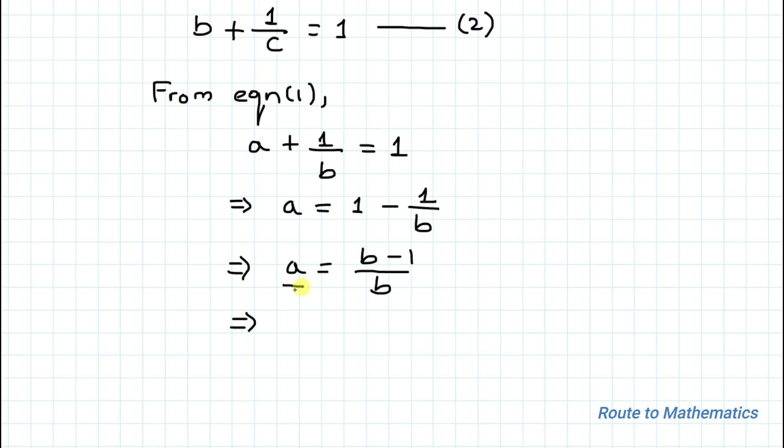For converting it you need to make it reciprocal on both sides. Reciprocal means numerator and denominator will interchange their place. So here we have 1/a, and on this side we'll do the reciprocal, which is b/(b - 1). So we have the value of 1/a.